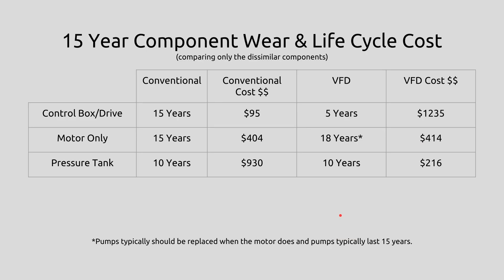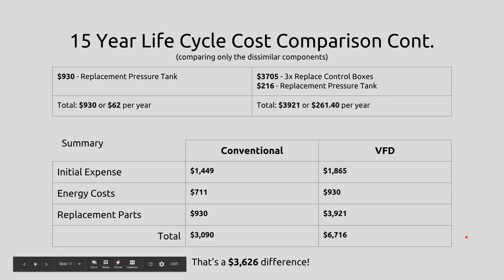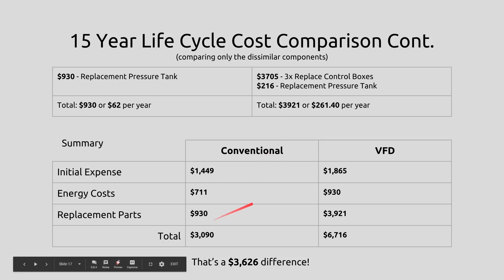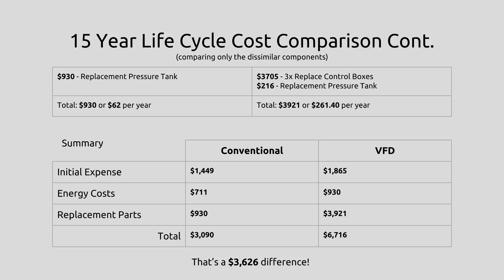Transitioning to the 15-year component wear and lifecycle costs: not a crazy amount of parts here — same as last time: control box, motor, and pressure tank. The 15-year lifecycle cost comparison summarized comes to $930 conventional versus $3,921 for VFD. When we put all that together, we come out with a total of $3,090 for the conventional and $6,716 for the VFD. So once again, in the long run, the conventional system works out to be a whole lot less money.